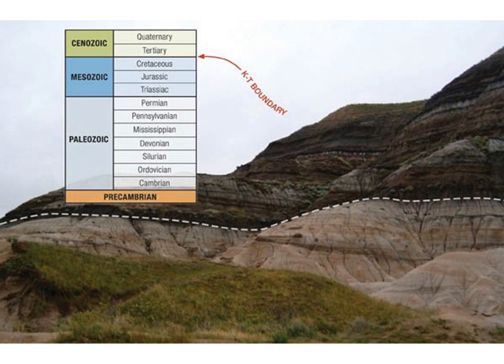We've looked at extinction horizons in the Permian-Triassic. Just like in that event, there's a very distinct difference in rock colors at the boundary, which tells you right away — assuming the rocks are laid down continuously — that there must have been a very dramatic shift from one type of environment to another. It has to occur very rapidly to change the way the rocks look; otherwise they would continue to look more or less the same, with maybe slight changes throughout.